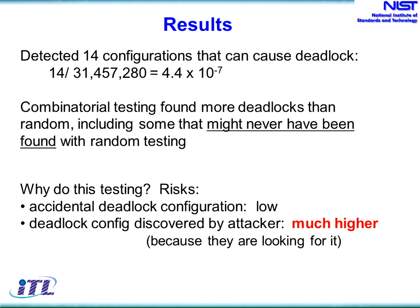If you're concerned about accidentally configuring your network to cause a deadlock, you probably don't have too much to worry about — the probability is something on the order of 4 times 10 to the minus 7. But if you're concerned about someone forcing your network into a deadlock, you have much more to worry about because in that case somebody's out there actively looking for it. You need to find those deadlock configurations before somebody else does.